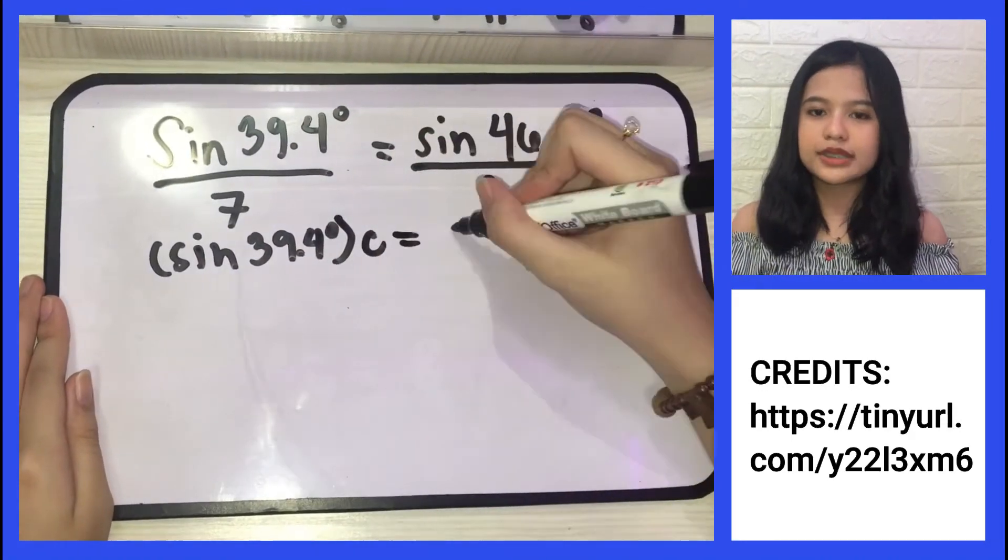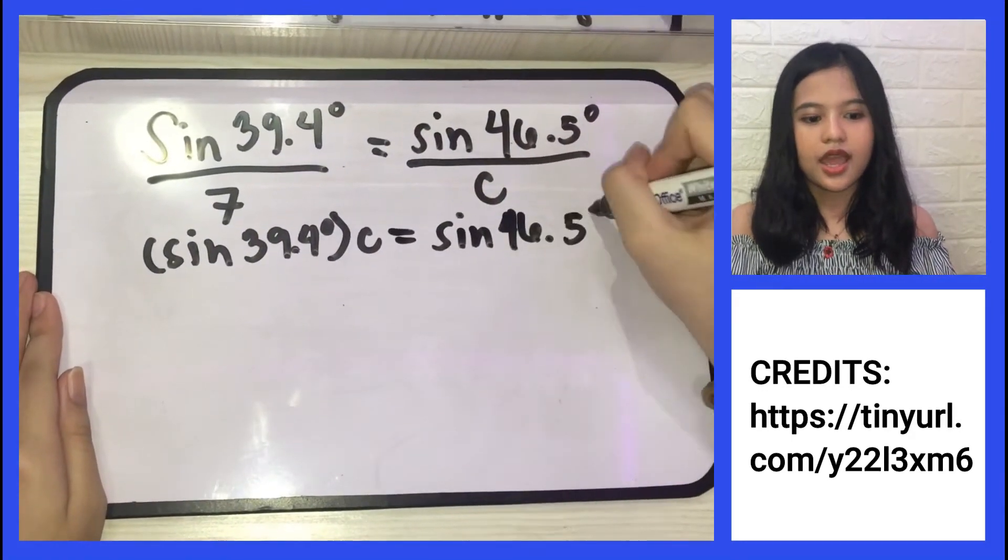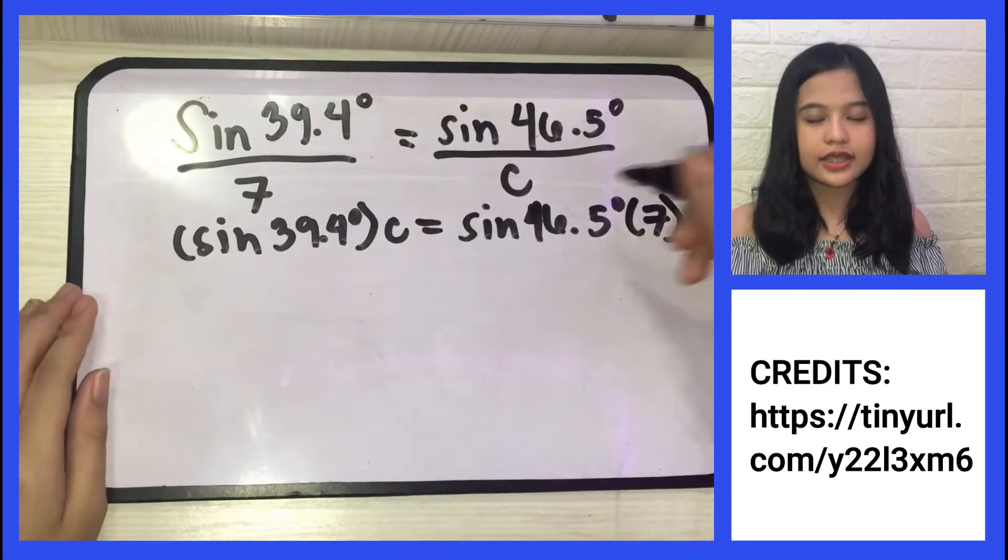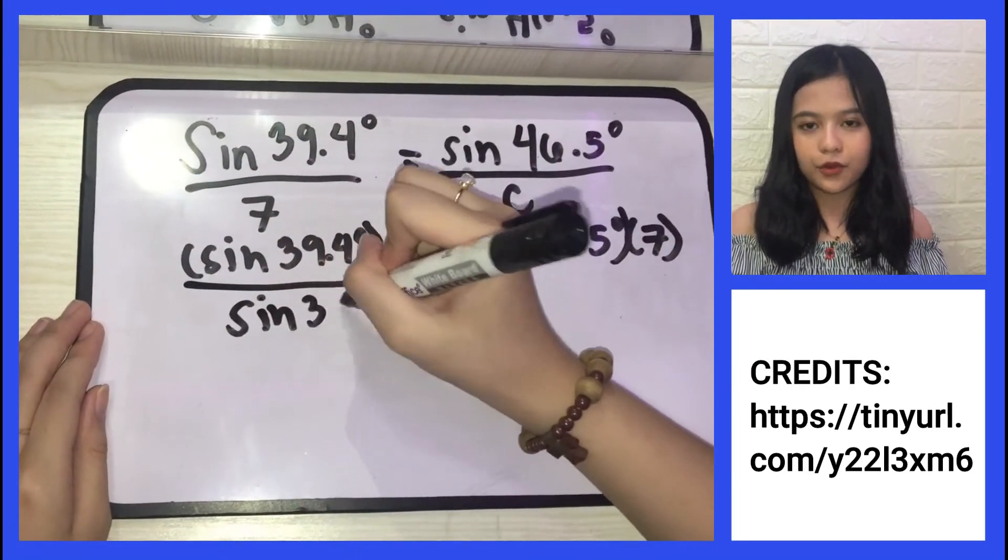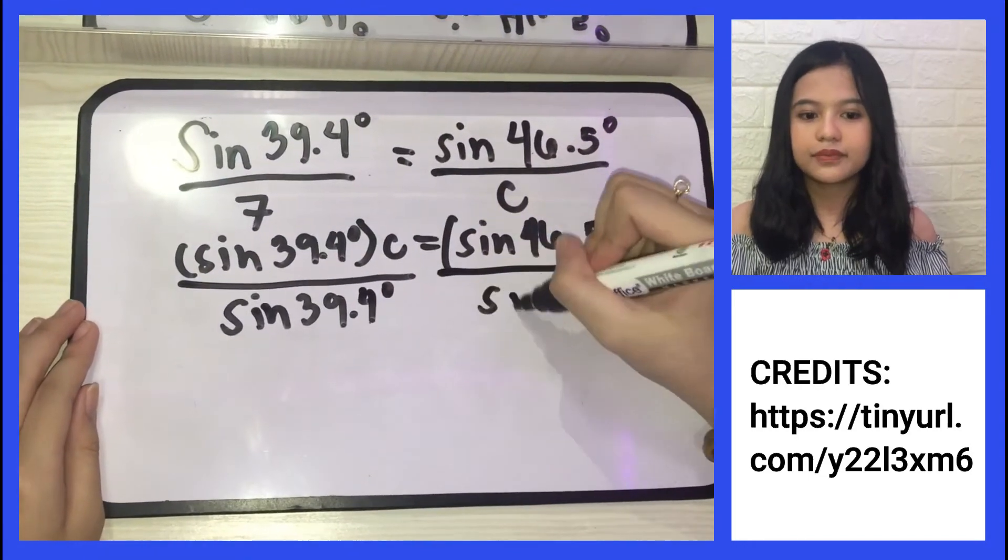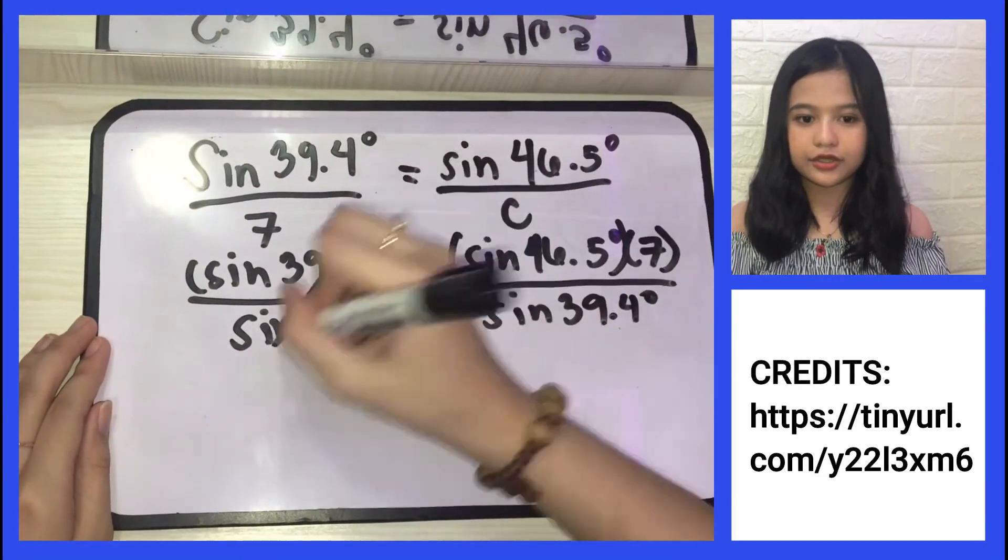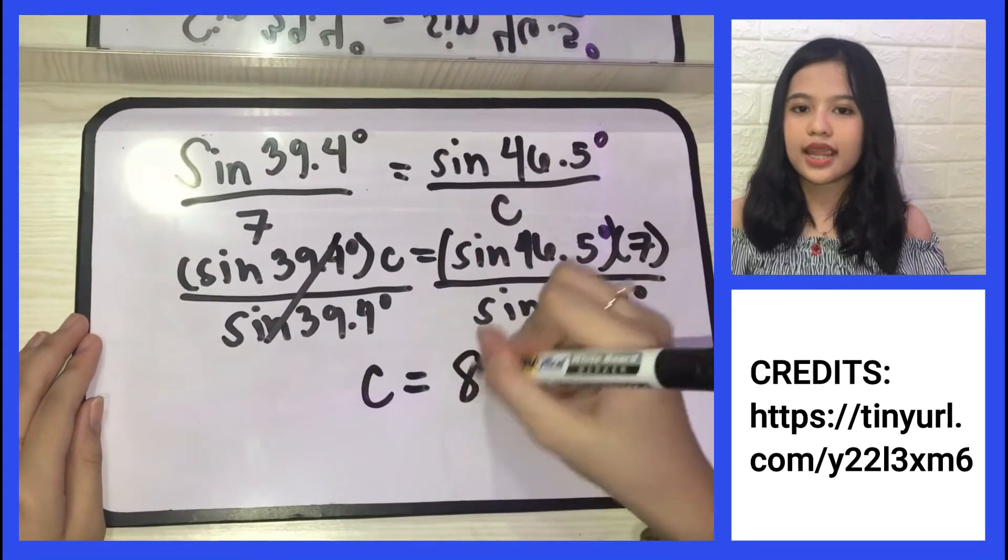To simplify, we simply cross multiply the equation. After that, we need to isolate C. To isolate C, we need to divide sin 39.4 degrees on both sides. And if we plug this in a calculator, we get c equals 8 units.